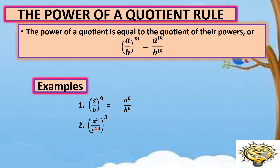How about this one: quantity x raised to 5 over y raised to 10, raised to 3. You're going to use 3 here to multiply to the exponents of the variables in the numerator and denominator. So, we have x raised to 5 times 3, and y raised to 10 times 3 in the denominator. Our final answer is x raised to 15 over y raised to 30, because 5 times 3 is 15 and 10 times 3 is 30.